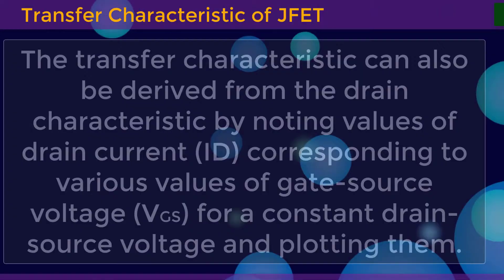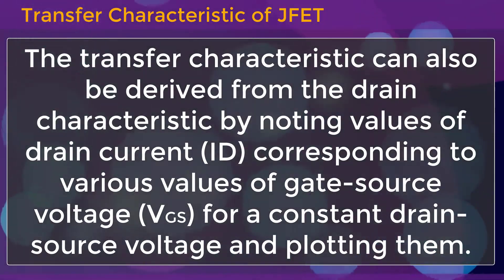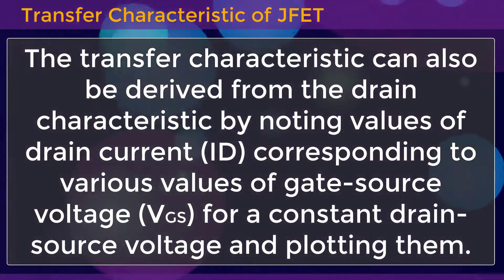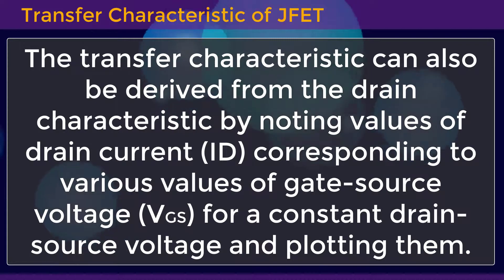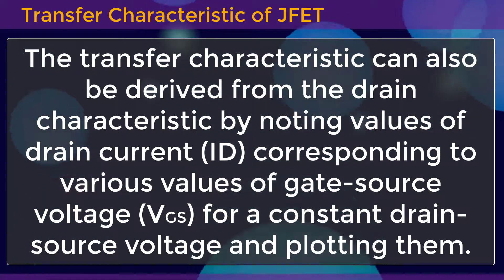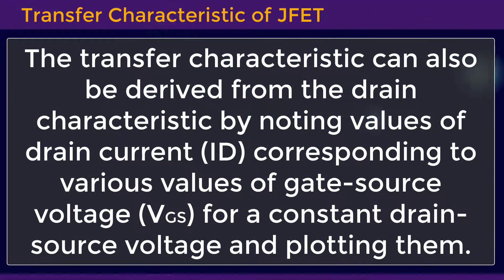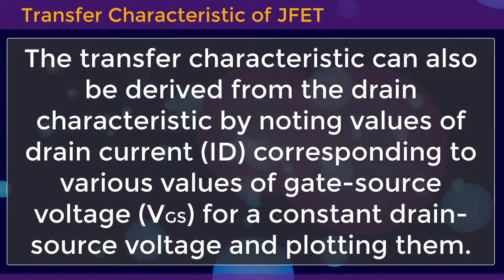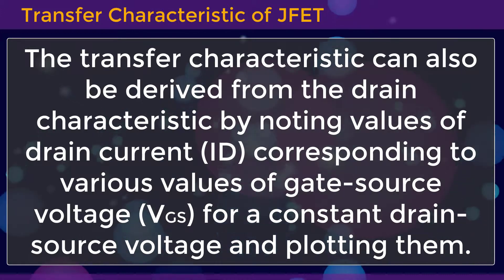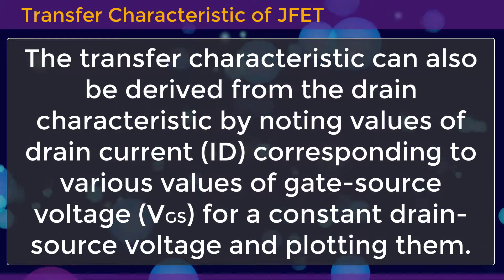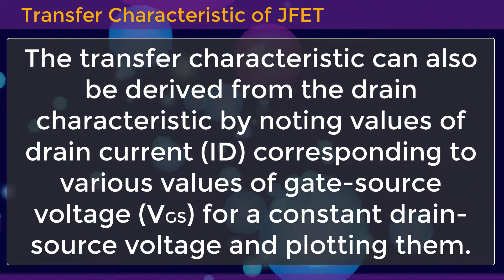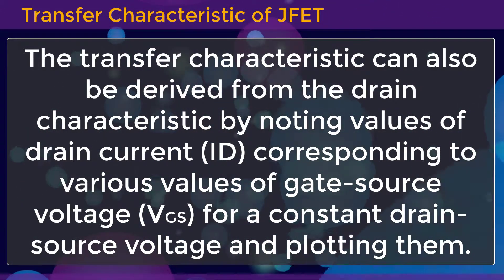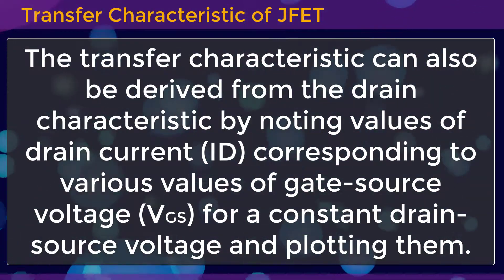The transfer characteristic can be derived from the drain characteristic by noting values of drain current ID corresponding to various values of gate-source voltage VGS for a constant drain-source voltage, and plotting them.